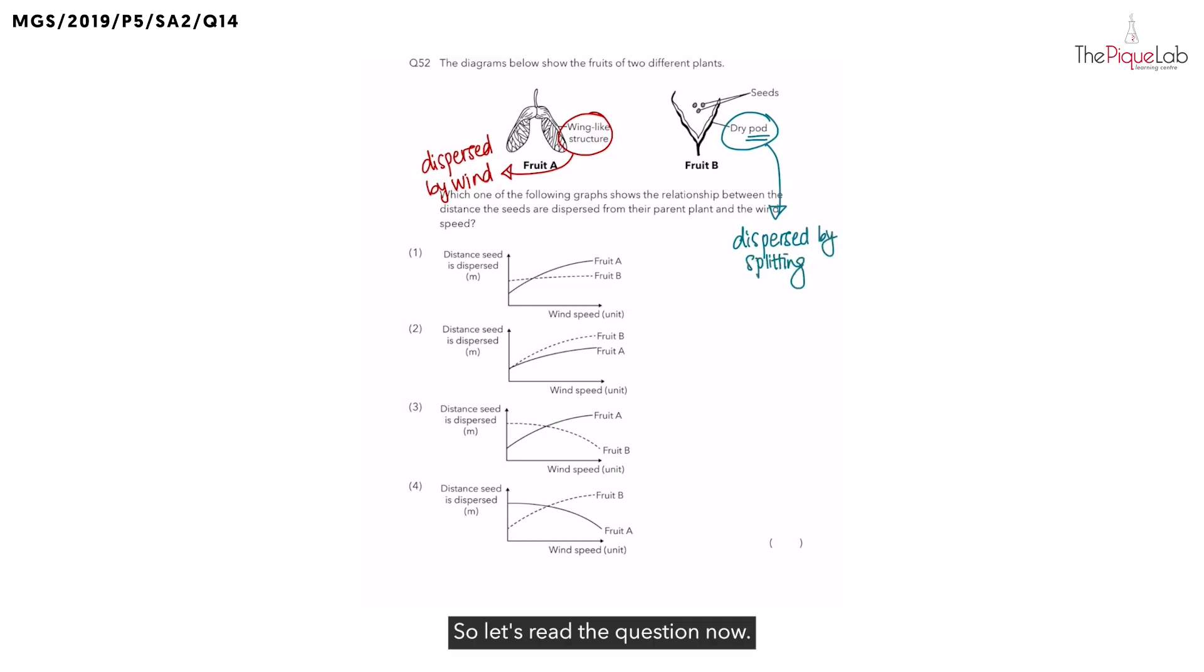So let's read the question now. Which one of the following graphs shows the relationship between the distance the seeds are dispersed from the parent plant and the wind speed? So what they're trying to do is they're asking you to choose which graph shows the correct relationship between the wind speed and the distance the seeds are dispersed for both fruit A and fruit B.